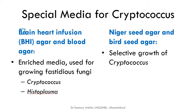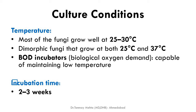BHI agar (Brain Heart Infusion agar) and blood agar are enriched media used for growing fastidious fungi like Cryptococcus and Histoplasma. Niger seed agar and bird seed agar are selective culture media for Cryptococcus.